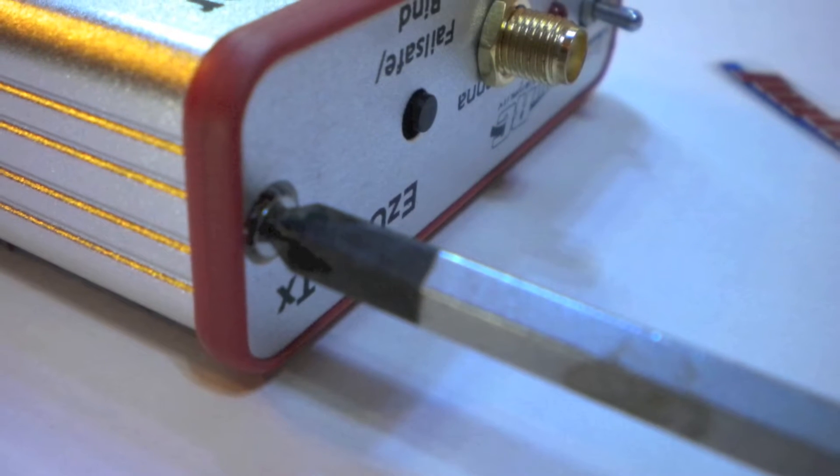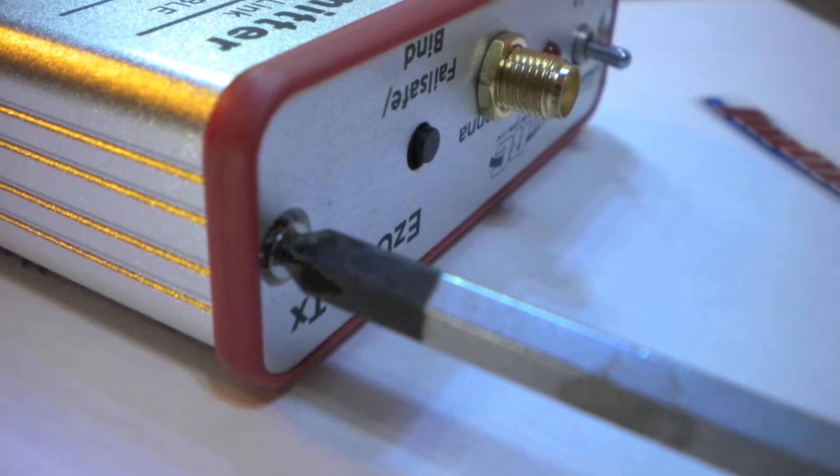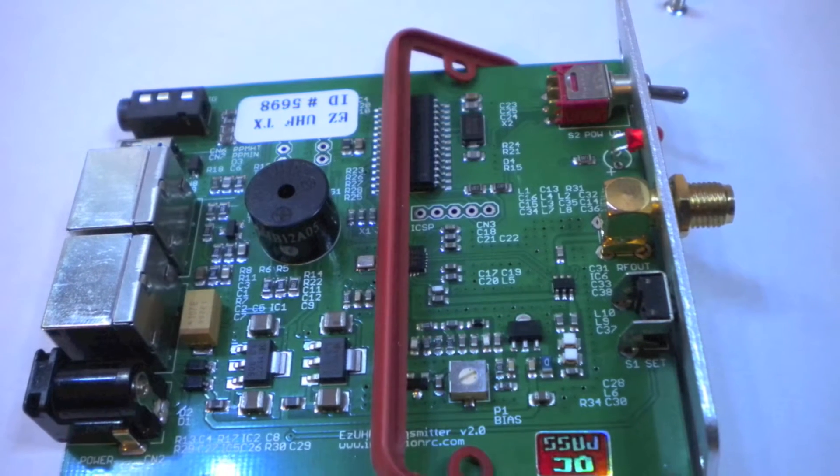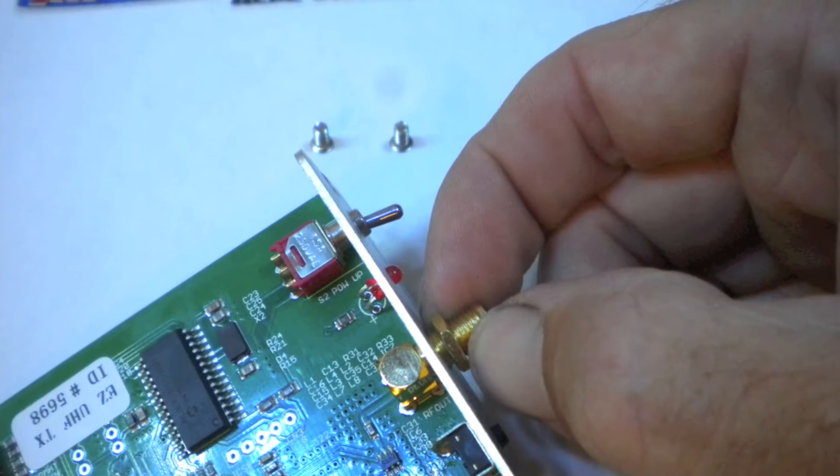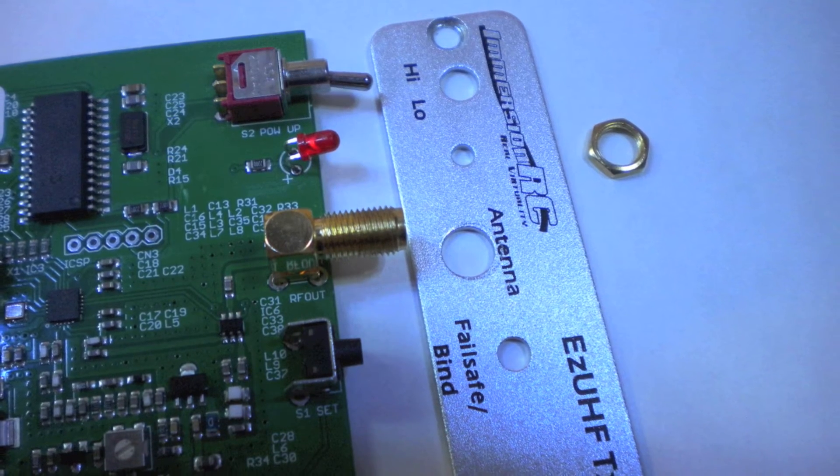So let's get started by removing the screws that hold the top end plate in place. This will let you slide the board out of the case. Next, remove the locking nut on the SMA connector and remove the top end plate from the board.